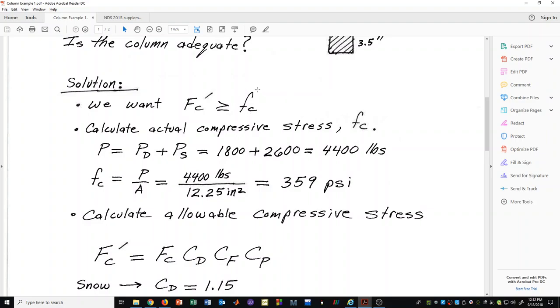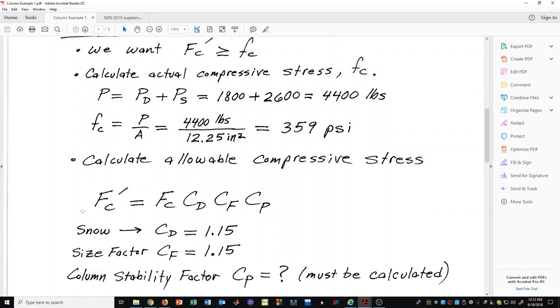Our next task is to calculate the allowable compressive stress because we want to be able to make this comparison and see if our column is adequate according to ASD. F sub c prime is going to be equal to the table value times the duration factor times a size factor and times the column stability factor.